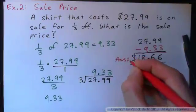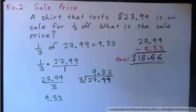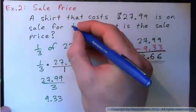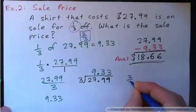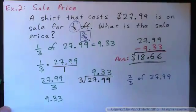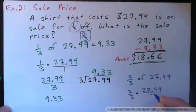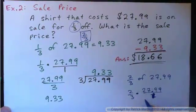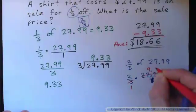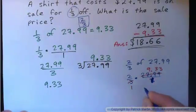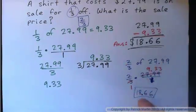There's another way of solving this problem. If it's on sale for one-third off, then you're going to have to pay two-thirds of the price. What we could have done is two-thirds of twenty-seven ninety-nine — two over three, of means multiply, multiplied by twenty-seven point nine nine over one. Three into that goes once, giving you the nine thirty-three. Two times three is six, two times three is six, two times nine is eighteen. So you end up with eighteen sixty-six that way too.